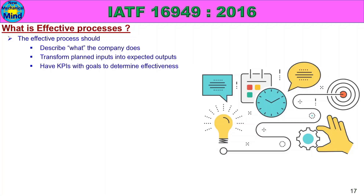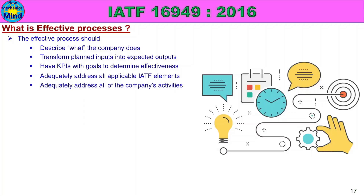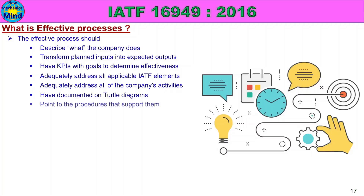An effective process should: adequately address all applicable IATF elements and meet requirements; adequately address all of the company's activities and cover all activities; and have documented turtle diagrams. It should also point to the procedures that support them.